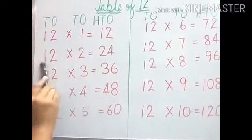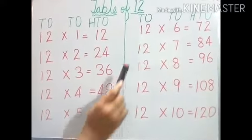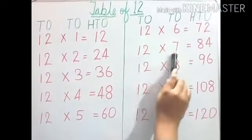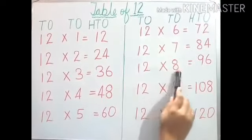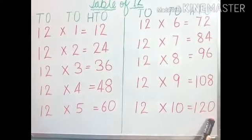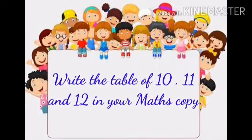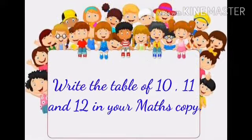And the last table — table of 12: 12, 1s are 12. 12, 2s are 24. 12, 3s are 36. 12, 4s are 48. 12, 5s are 60. 12, 6s are 72. 12, 7s are 84. 12, 8s are 96. 12, 9s are 108. 12, 10s are 120. Like this you will practice at home. For homework: write the tables of 10, 11 and 12 in your maths copy.